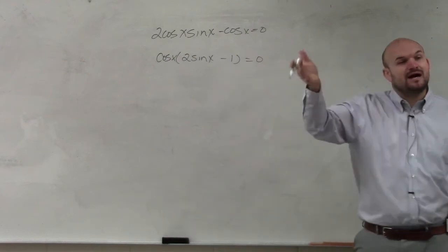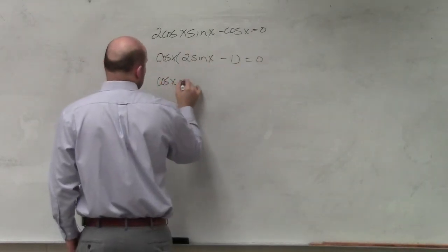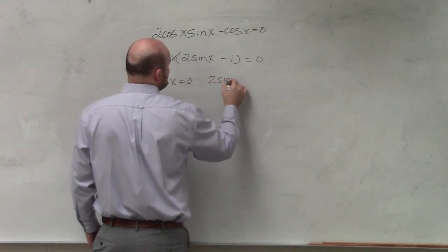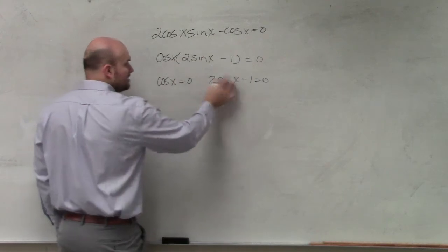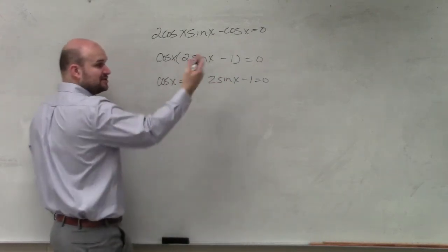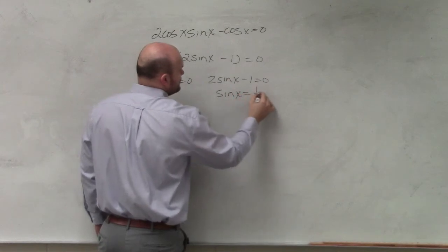Then, since we have the product equal to 0, now what we can do is say cosine of x equals 0 and 2 sine of x minus 1 equals 0. Solve this for x using inverse operations. Add 1 to both sides. Divide by 2 on both sides. Sine of x equals 1 half.